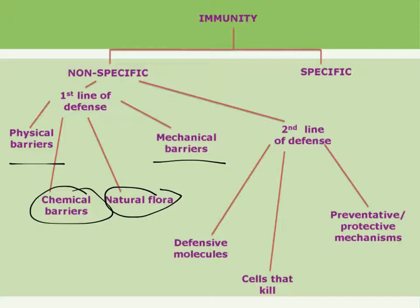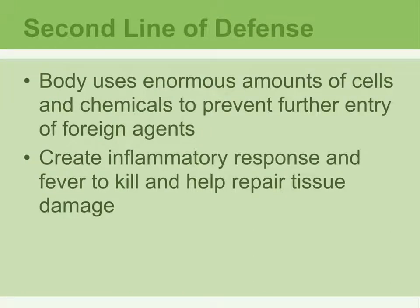The second line of defense kicks in when the first line has been compromised — for example, when there's a cut in the skin or the pathogen has bypassed the first line of defense. When pathogens get in through a cut, there is tissue damage, so the second line of defense is involved in repairing that damage while also trying to prevent the pathogen or foreign substance from getting further into the body.